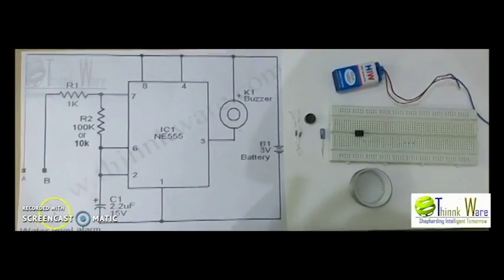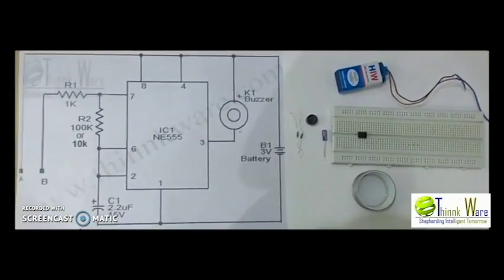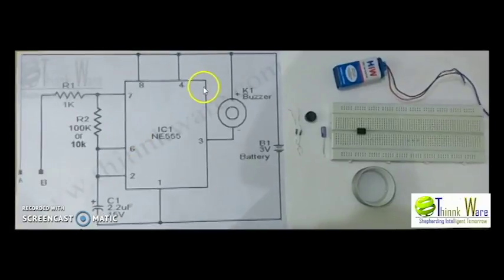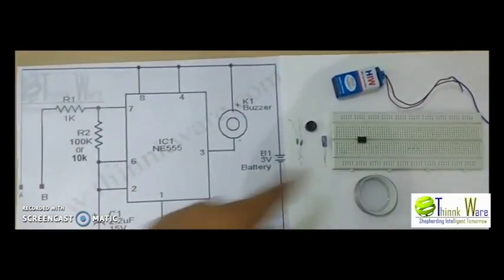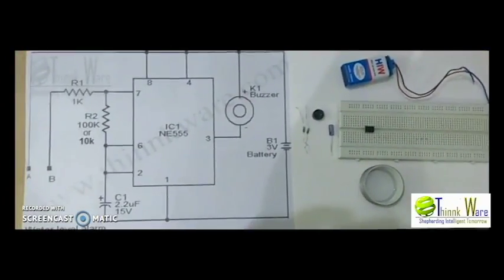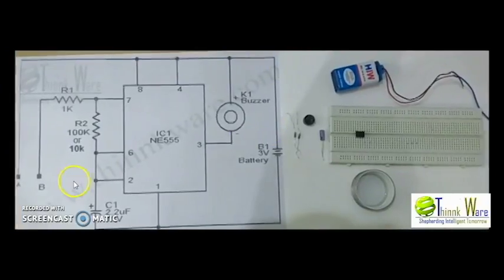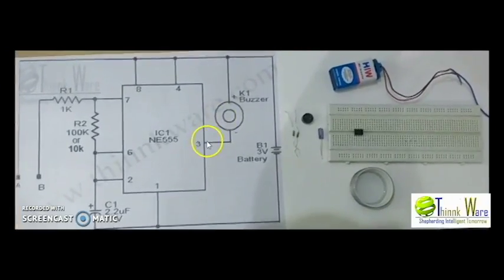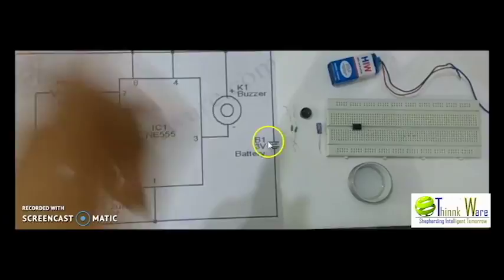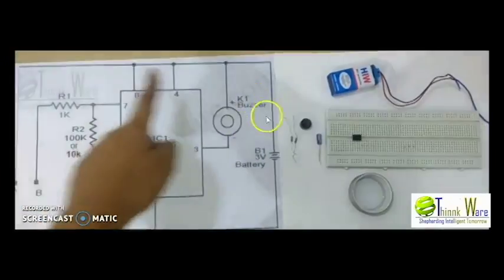Water level indicator or alarm. Now as you can see, the 8th and 4th pin of the 555 timer IC are connected to the positive terminal of the battery, and pin 3 is connected to the positive terminal of the battery through a buzzer.